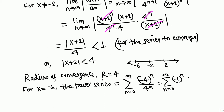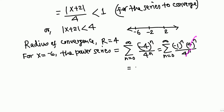Do not cancel yet because negative 4 is the same as negative 1 times 4. So we rewrite (negative 4)^n as (negative 1)^n times 4^n, and now the 4^n cancels. We are left with the series sum of (negative 1)^n from n equals 0 to infinity. When we plug in n=0 we get 1, then negative 1, positive 1, negative 1 — the nth term never goes to 0.